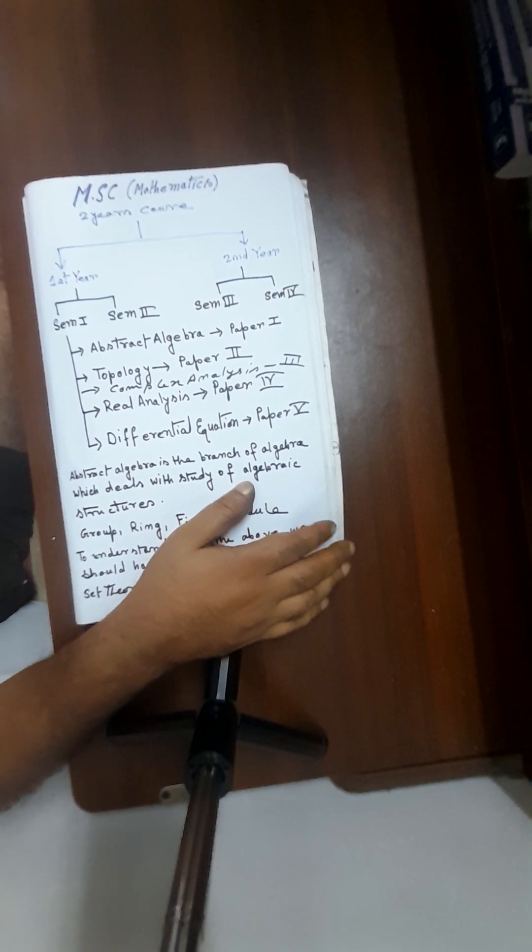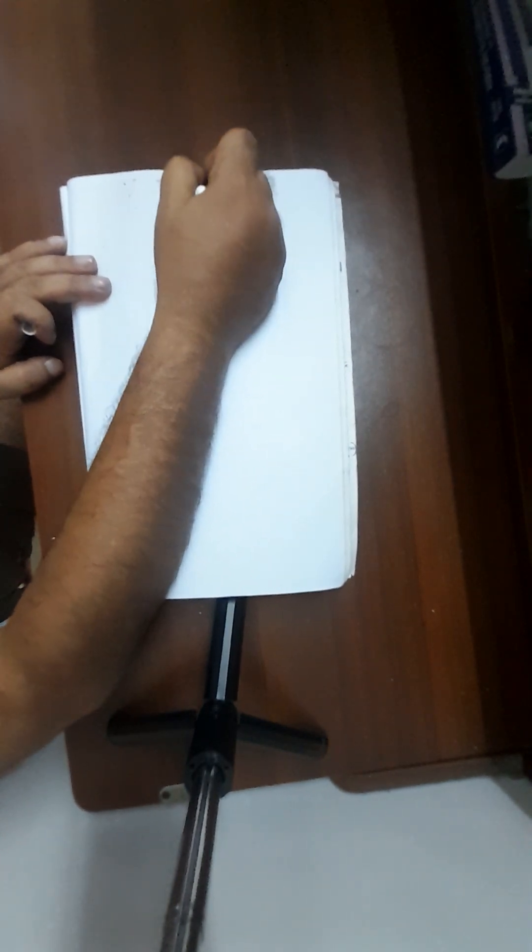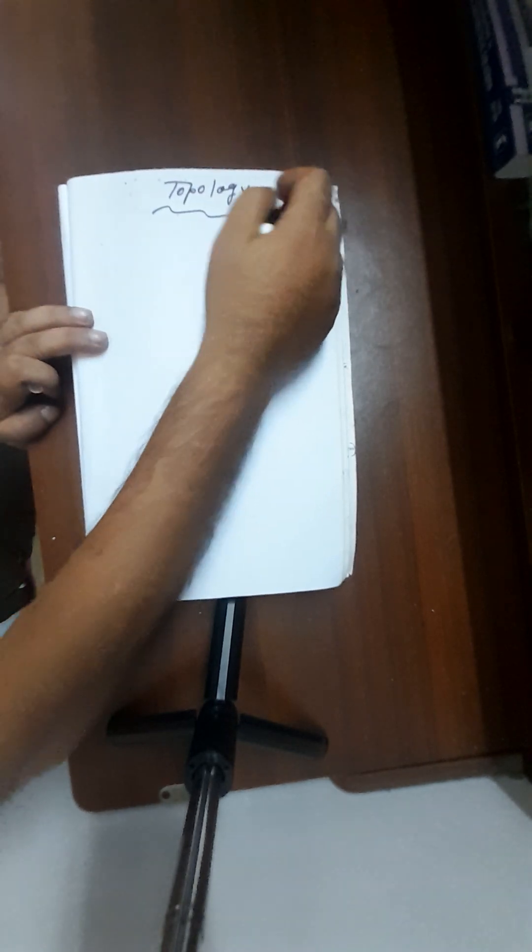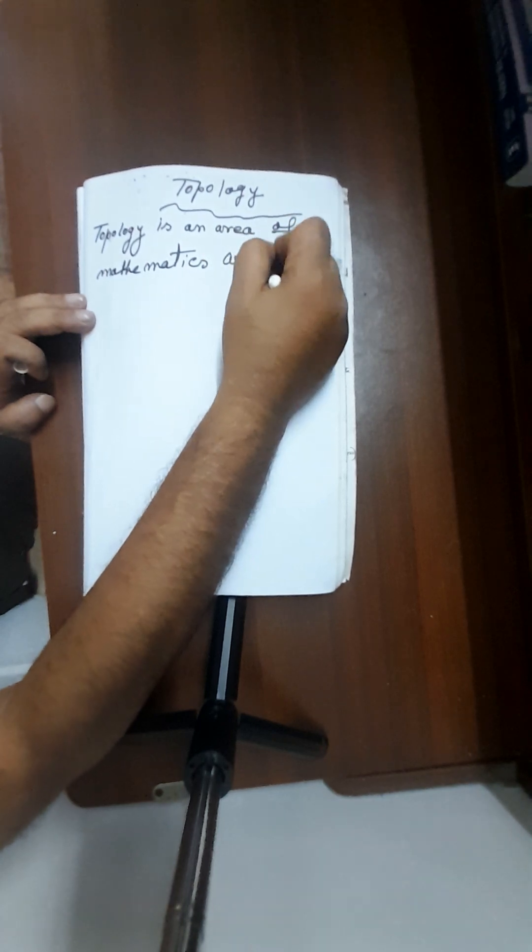So let's start with Topology. What is Topology? In simple words, topology is an area of mathematics which studies how spaces are organized.